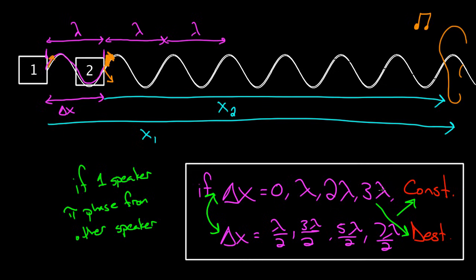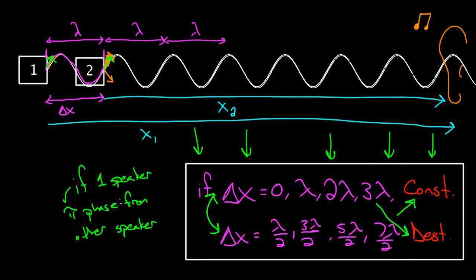I have to impress upon you that this does not just apply for speakers. This applies for light in a double-slit experiment, or light in a thin film experiment, or sound with speakers, or water waves. Any time that's the case, this rule holds. In fact, this is the fundamental rule for almost all wave interference: the path length difference, along with whether there's a relative pi phase shift between the two sources, will determine whether you get constructive or destructive interference.